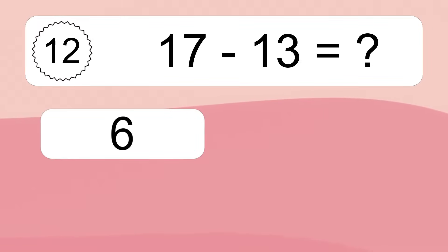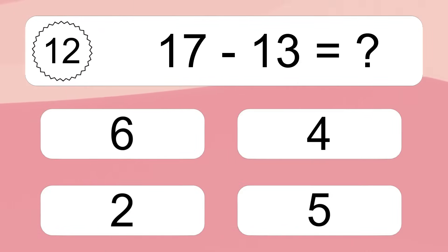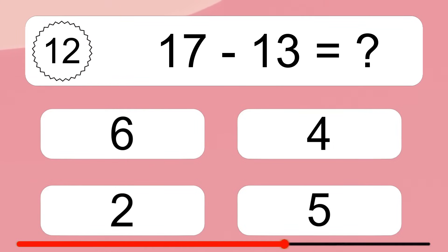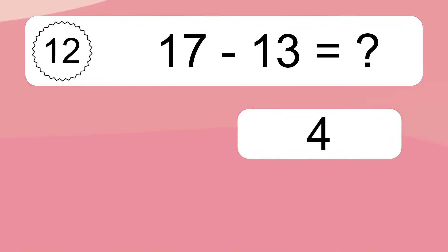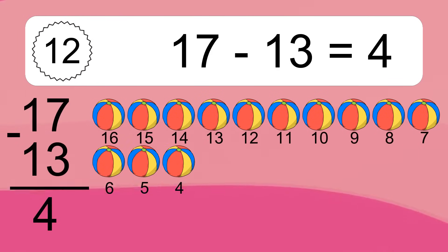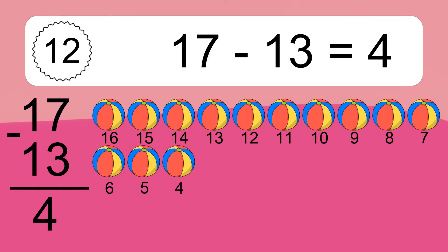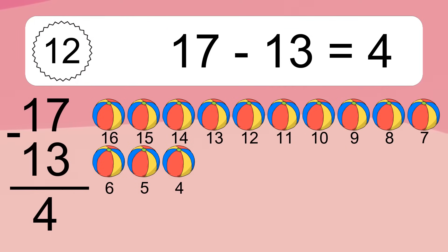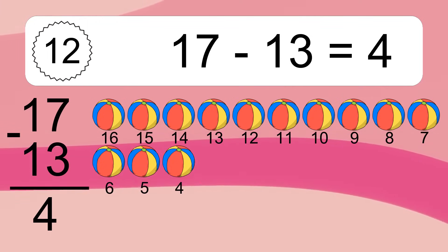17 minus 13 equals what? 17 minus 13 equals 4. Let's count it. 16, 15, 14, 13, 12, 11, 10, 9, 8, 7, 6, 5, 4.